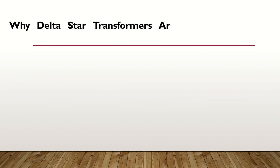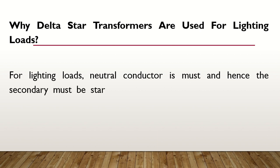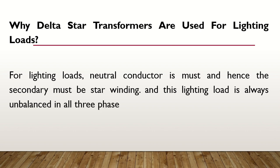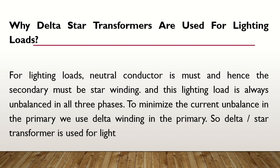Why are delta-star transformers used for lighting loads? For lighting loads, a neutral conductor is a must, and hence the secondary must be star winding. Lighting load is always unbalanced in all three phases. To minimize the current imbalance in the primary, we use delta winding in the primary. So delta-star transformers are used for lighting loads.